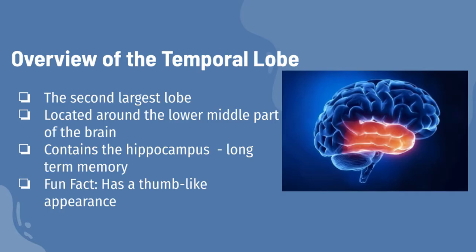The temporal lobe is the second largest region of the brain. It's located on the lower middle part of the brain, right next to your temples, above your ears. The temporal lobe contains the hippocampus, which is responsible for long-term memory. Fun fact: the temporal lobe has a thumb-like appearance.